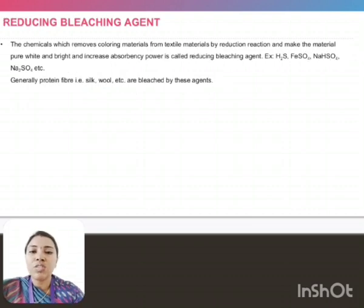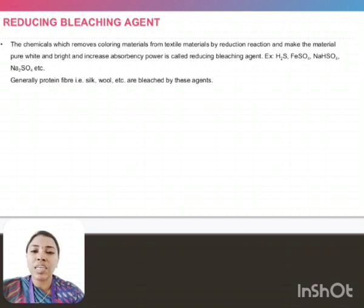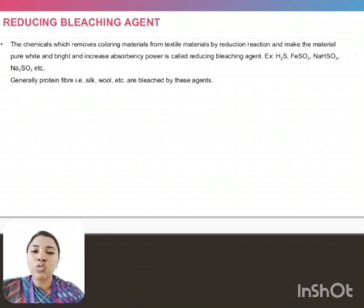Reducing bleaching agents are chemicals that remove the coloring material from the textile material by reducing reaction and make the material pure, white and bright, and increase the absorbency power of the fabric. Example: Na2SO4. Generally, these agents are used for the protein fibers and animal fibers.